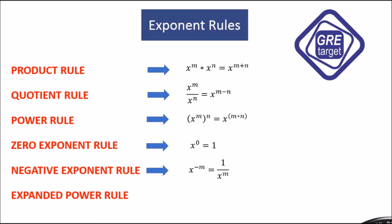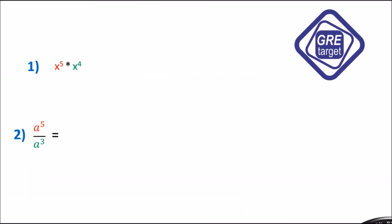For the negative exponential rule, x raised to minus m equals 1 divided by x raised to m. Conversely, if we have a positive x raised to m and want to make it negative, it becomes 1 over x raised to minus n. The last rule is the expanded power rule: ax divided by y, the whole raised to m, gives a raised to m times x raised to m divided by y raised to m.